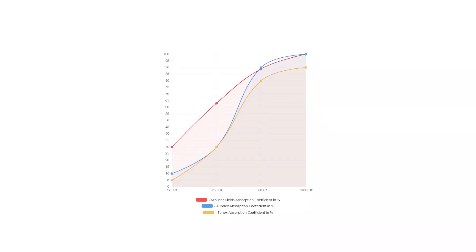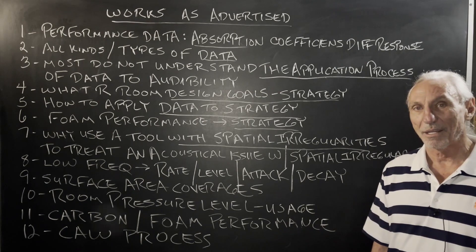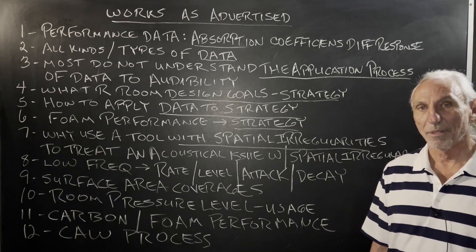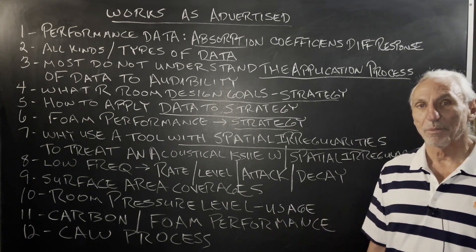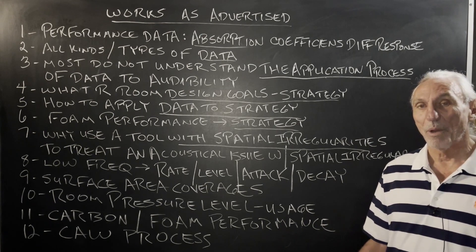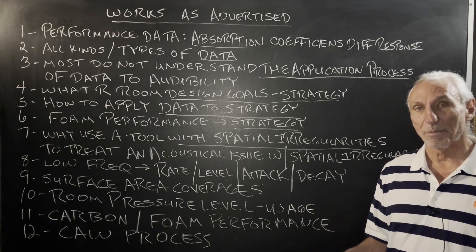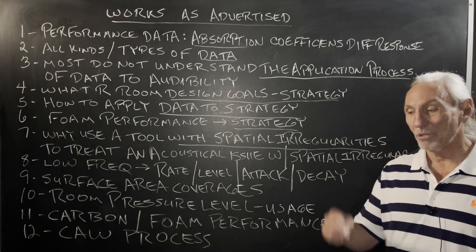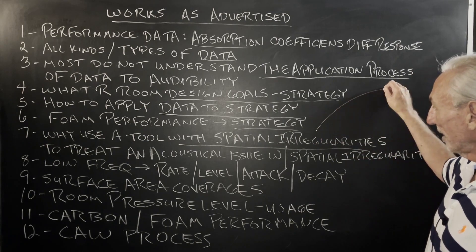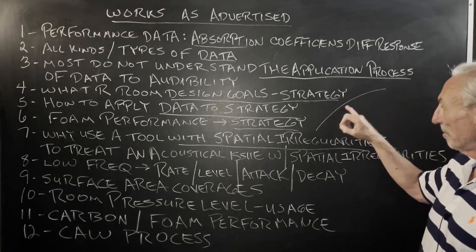Look at the foam curves comparing our two largest competitors with our product. Why would you treat a middle and high frequency issue with a product that has peaks and dips like that? Why would you treat a problem with another problem? So if you don't know how to interpret the data — and that data is a little obvious, some are a little bit more subtle — why would you treat a middle and high frequency problem in your room with something that has huge peaks and dips in its response? Look at how smooth ours is. That's what you want: predictable and consistent.